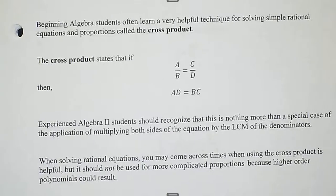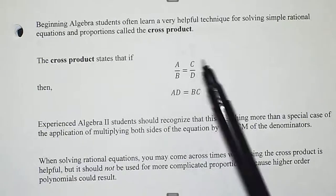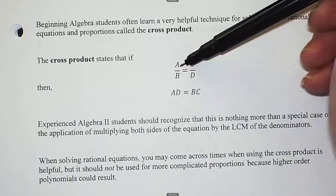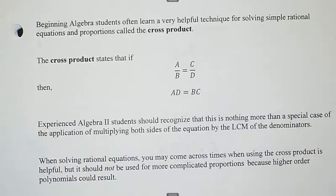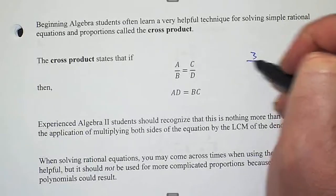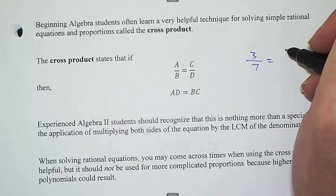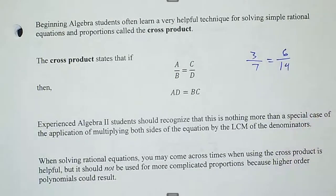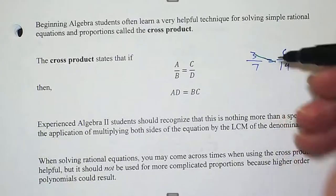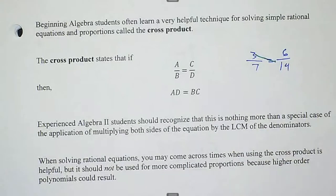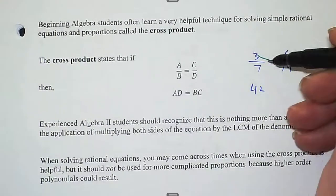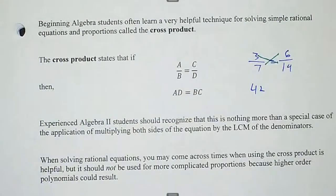The cross product property says that if I have two proportions a/b = c/d, then the product a times d equals c times b. Putting down some numbers confirms this: suppose I had 3/7 and 6/14 — those two fractions are definitely equal. Their cross products should be the same: 3 times 14 is 42, and 7 times 6 is also 42.